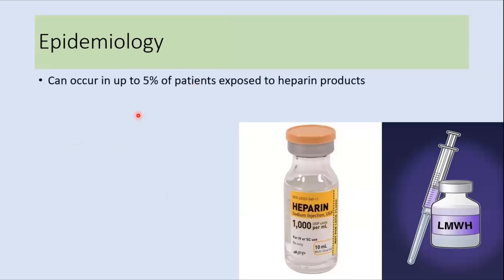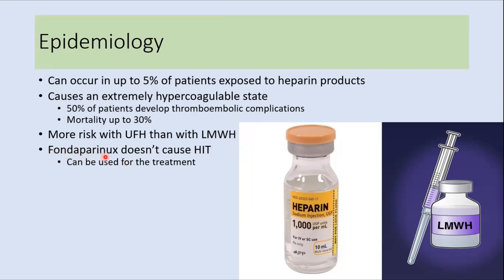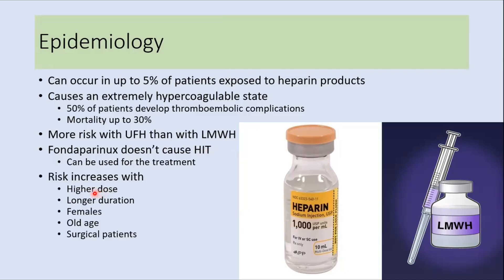Regarding the epidemiology, HIT can occur in up to 5 percent of patients exposed to heparin products and causes an extremely hypercoagulable state, with 50 percent of patients developing thrombotic complications and mortality up to 30 percent. This condition is more common with unfractionated heparin than with low molecular weight heparin. Fondaparinux, a pentasaccharide, does not cause HIT and can actually be used for its treatment. The risk of HIT increases with higher doses of heparin, longer duration of use, in female patients, older patients, and those requiring surgical intervention.